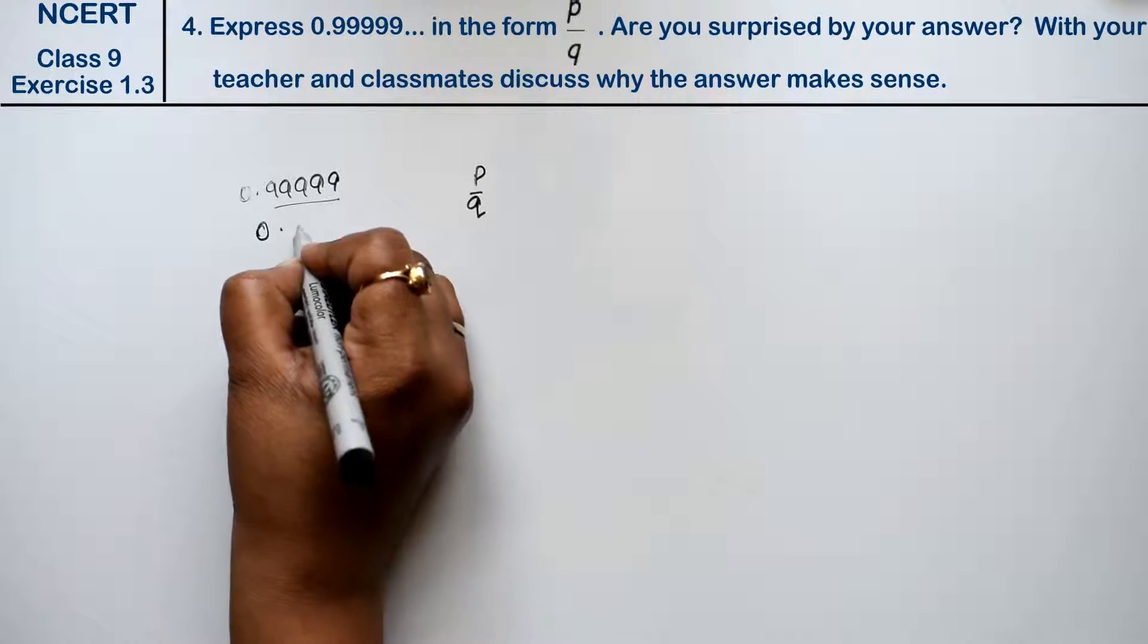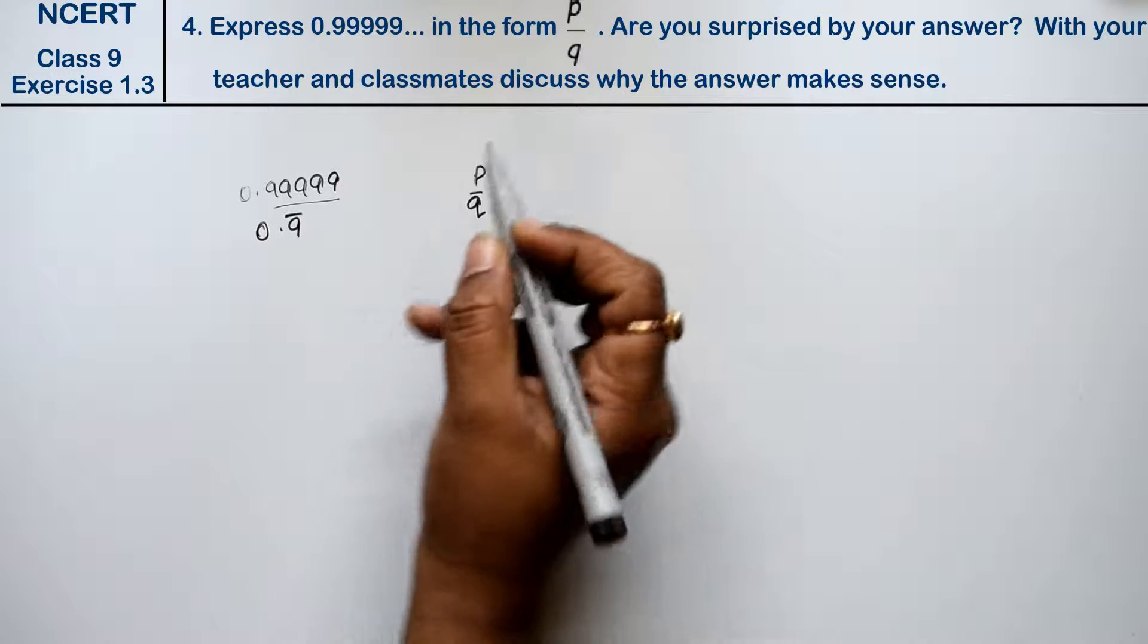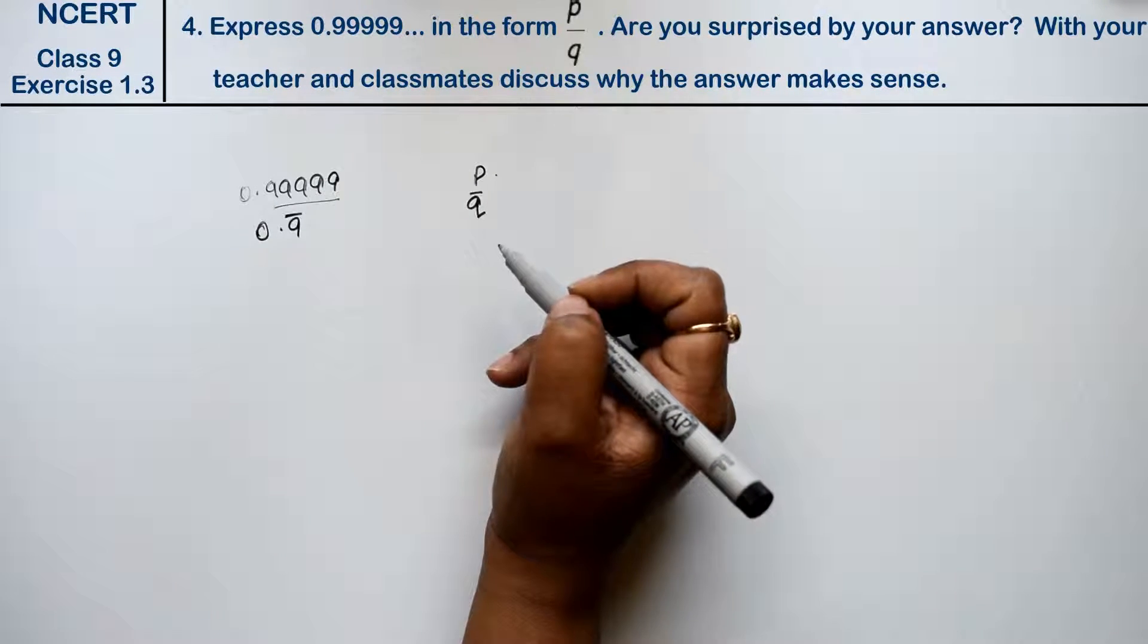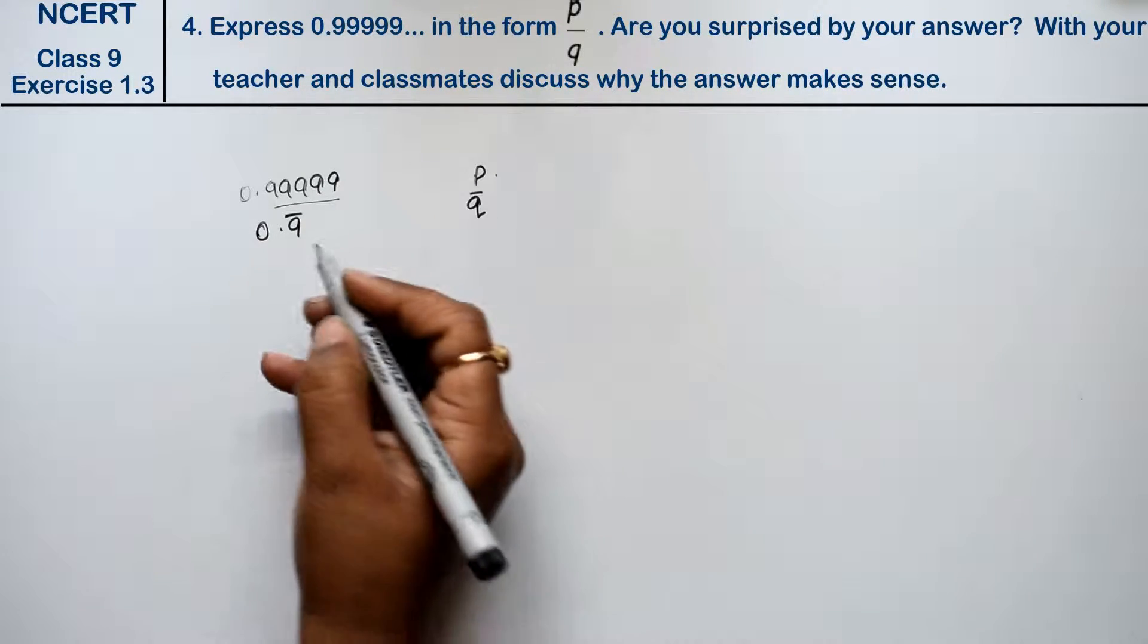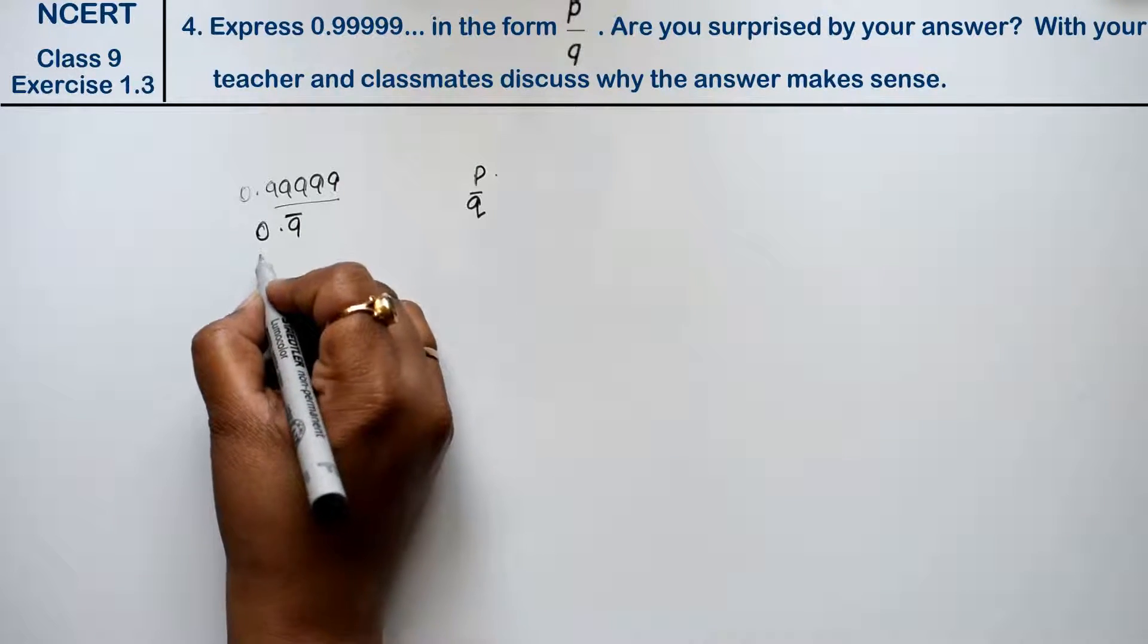See, 9 is repeated. We can write 0.9 bar and we have to do p upon q, in the form of p upon q. What do we think about this? Let x equals to 0.9 bar. This is our equation first.